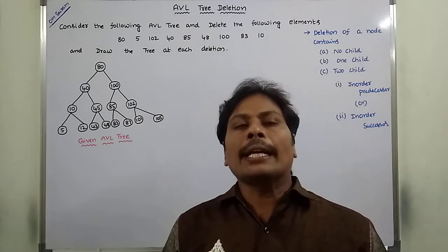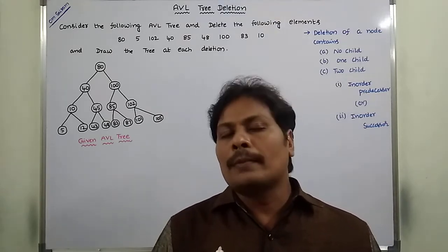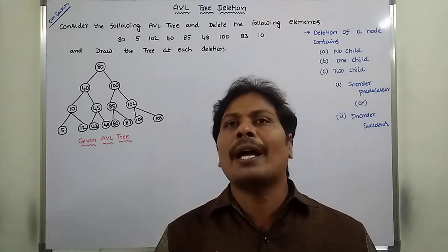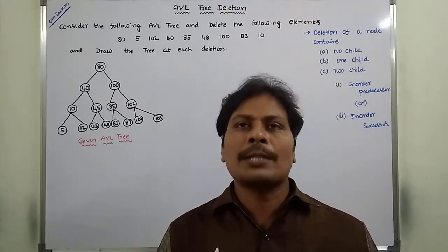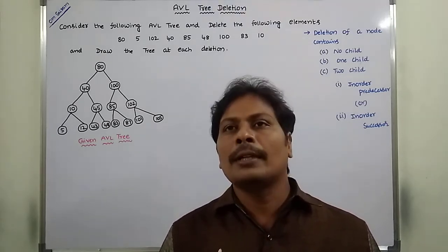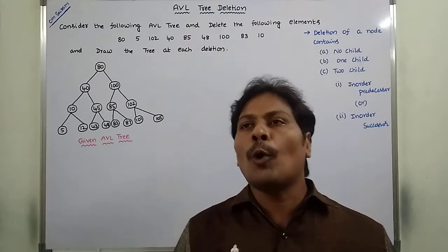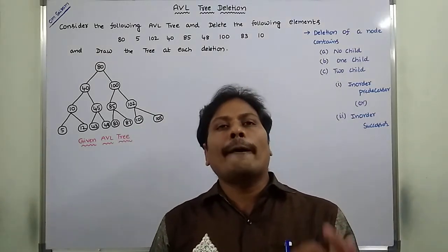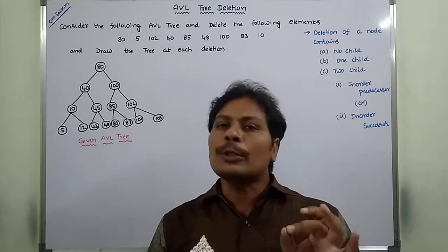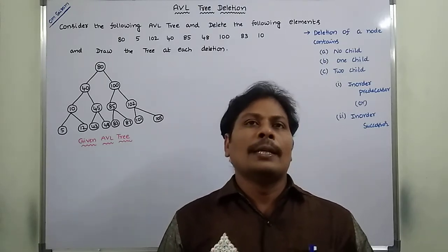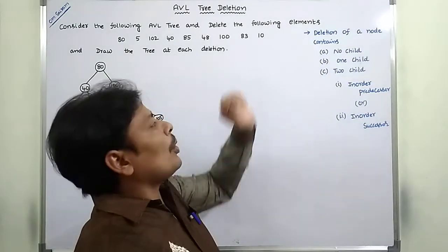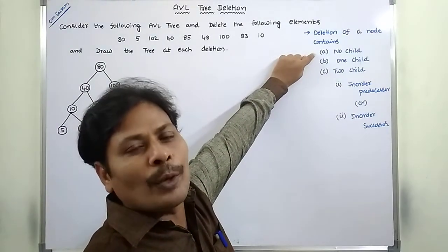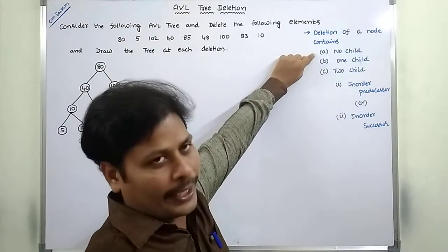Before going to the example problem, suppose we want to delete a node from the AVL tree. First, we have to observe whether that node has no children, one child, or two children. Suppose that node has no child — there is no problem, we simply have to delete that node.